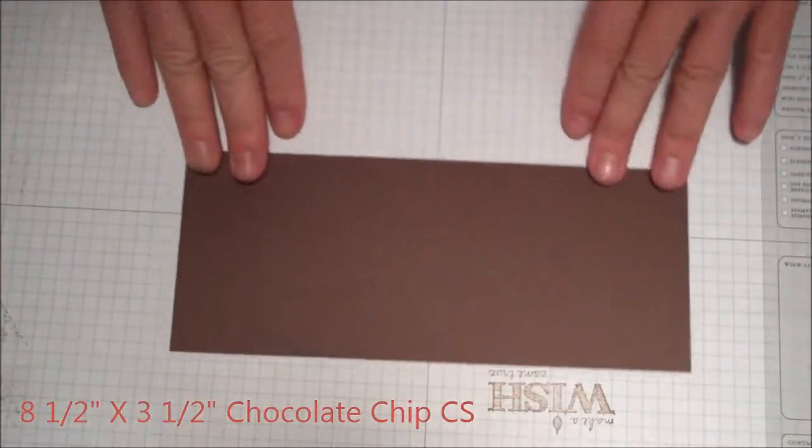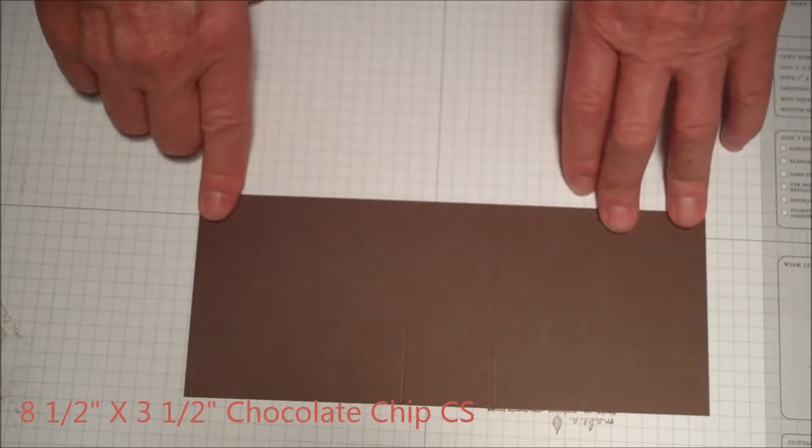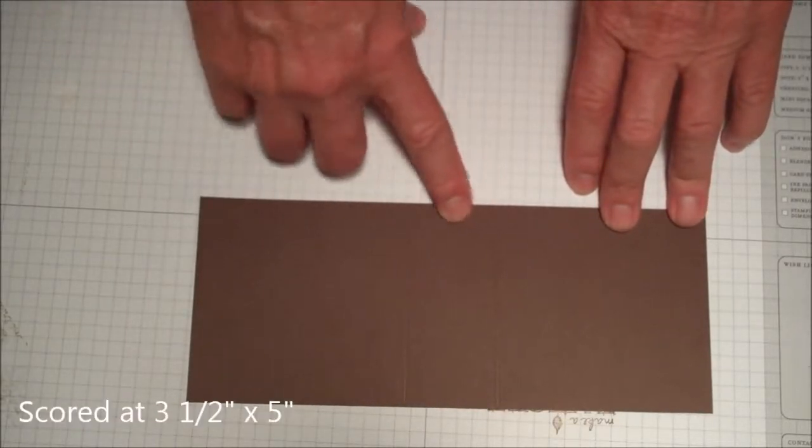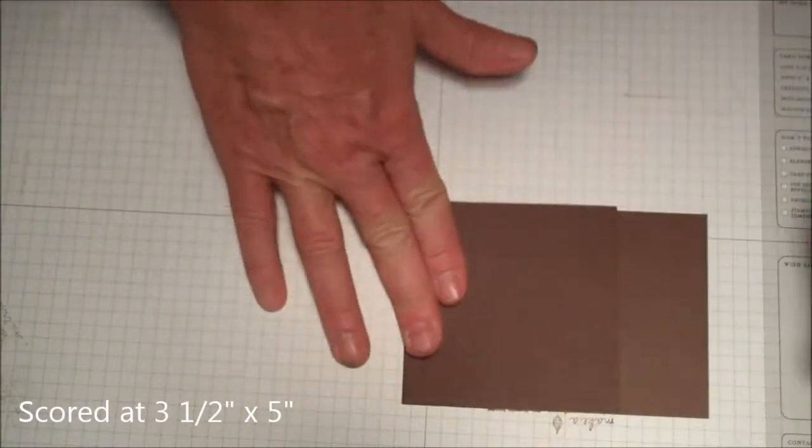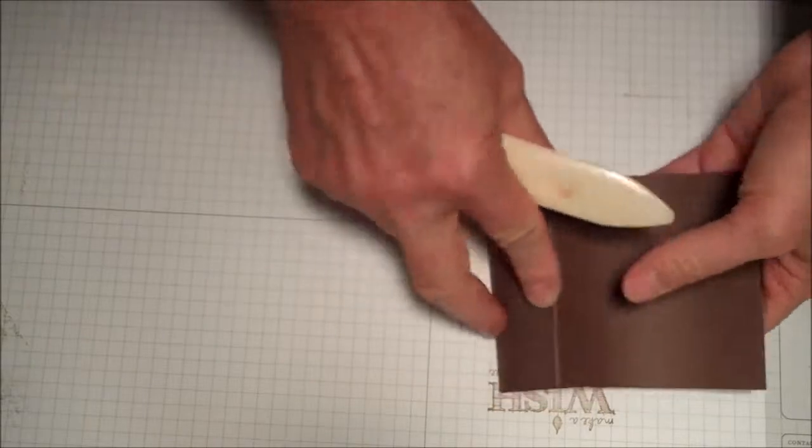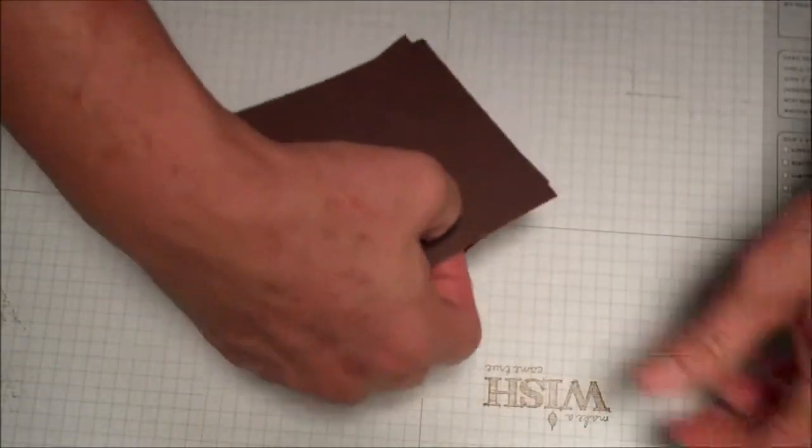You're going to start off with an 8.5 by 3.5 by 8.5 inch piece of chocolate chip cardstock, and then I scored it at 3.5 and 5, 3.5 and 5, 3.5 and 5. Take your bone folder and crisp it down. That is the base.